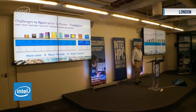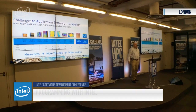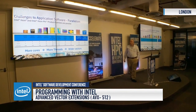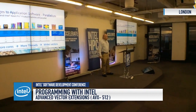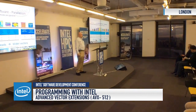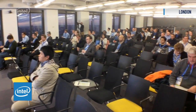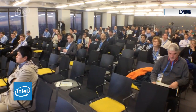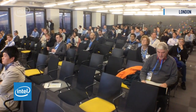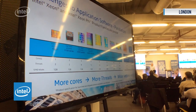And here you see it. What are the challenges to the application software? Well, there are two, and Robert and others have talked about them a lot: we have more cores — that's one level of parallelism.